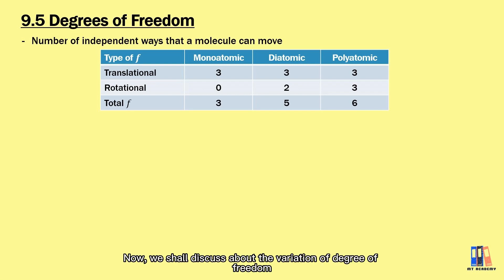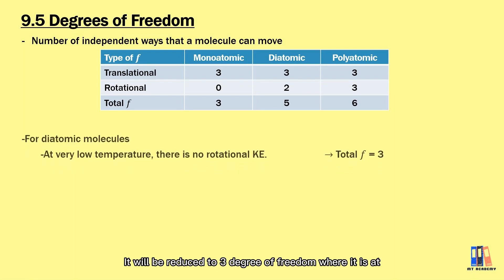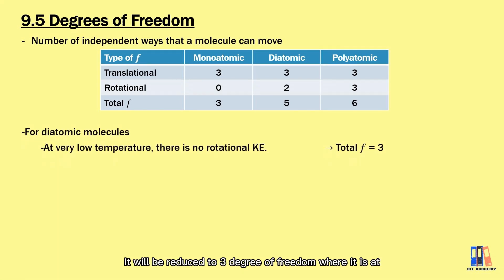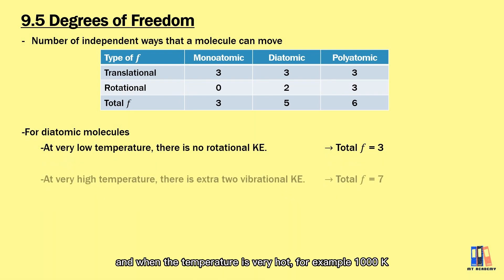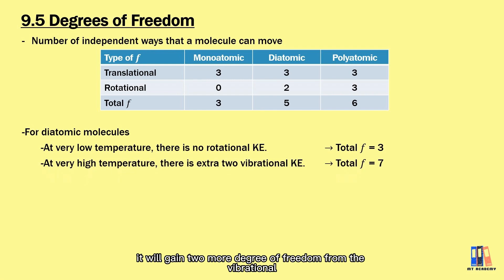Now, we shall discuss about the variation of degree of freedom with temperature for the diatomic molecule. It will be reduced to 3 degrees of freedom when it is at very low temperature. And when the temperature is very hot, for example 100 Kelvin, it will gain 2 more degrees of freedom from the vibrational kinetic energy. This could be understood by the energy of the molecule itself which is proportional to the temperature. In simple, the gas molecule is very active when it is very hot or it will become slow when it is very cold.